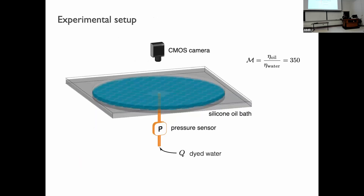We first saturate the microfluidic cell with viscous silicone oil, and then inject water to displace the oil. If we calculate the viscosity ratio — defined as the viscosity of oil divided by the viscosity of water — the ratio is 350, meaning we have a viscously unfavorable system where the water is much less viscous than the silicone oil.